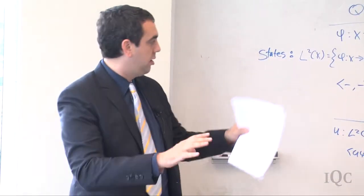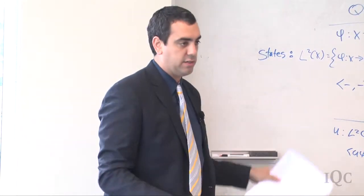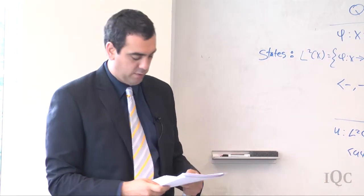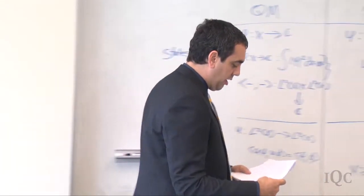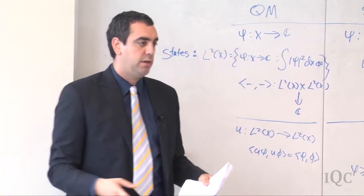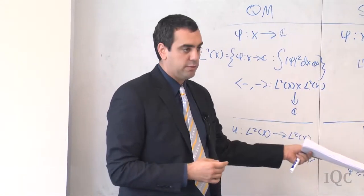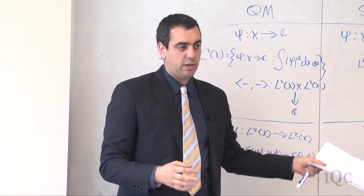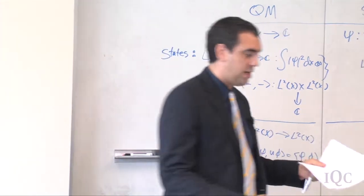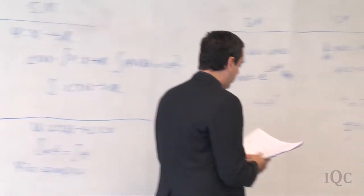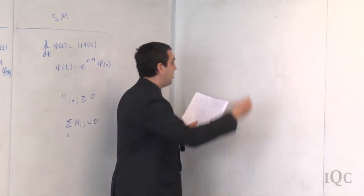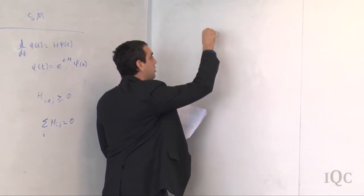The reason you need a complex number in the quantum case is conventional — without it you'd have skew-adjoint rather than self-adjoint operators. In quantum mechanics the generators satisfy H = H†. In stochastic mechanics the conditions are that the off-diagonal entries are ≥ 0 and summing over a row gives zero. That's quantum versus stochastic mechanics in a nutshell.